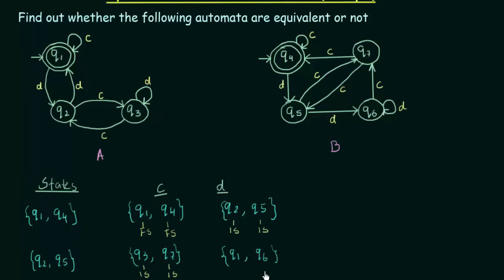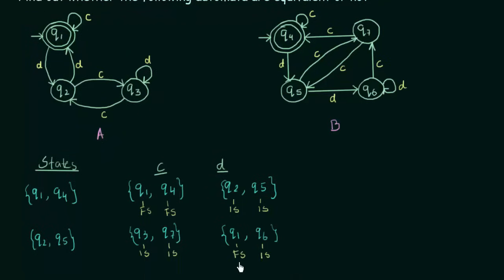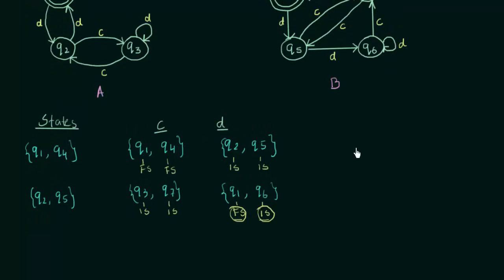Let us check what kind of pairs these are. Q3 is a final state, whereas Q6 is an intermediate state. In this pair we are getting one state to be a final state and the other to be an intermediate state. Whenever you get this condition, it proves that the two given automata cannot be equivalent. So this shows that automaton A and automaton B are not equivalent. There are more pairs we could check, but this condition is sufficient to conclude that A and B are not equivalent.